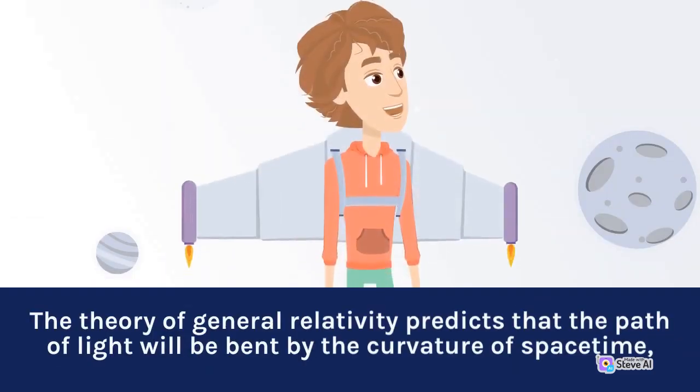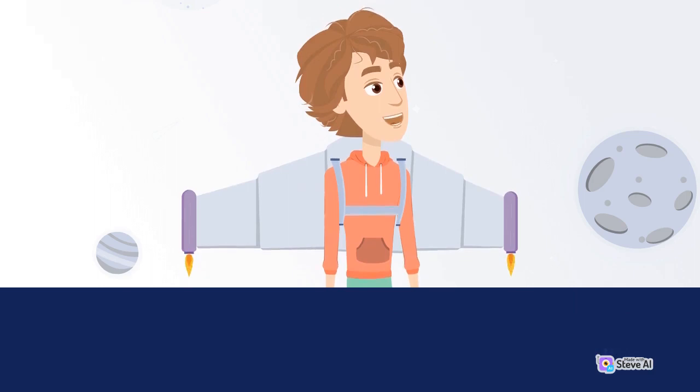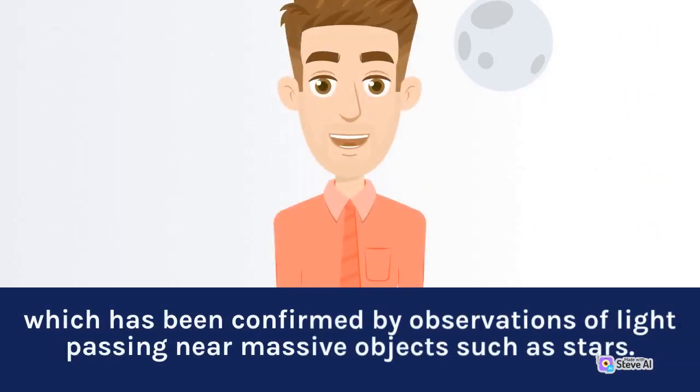The theory of general relativity predicts that the path of light will be bent by the curvature of spacetime, which has been confirmed by observations of light passing near massive objects such as stars.